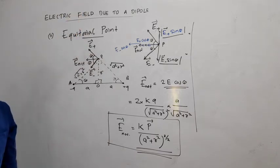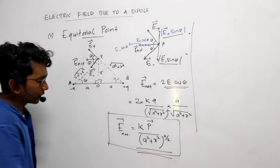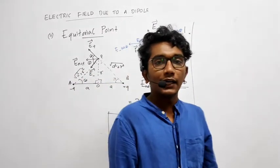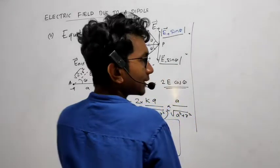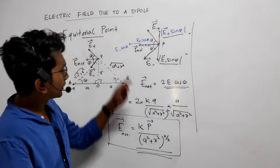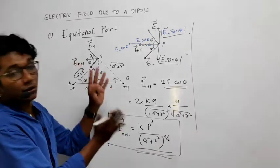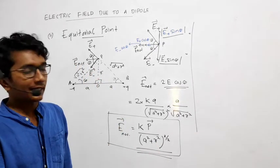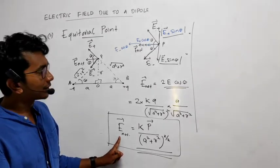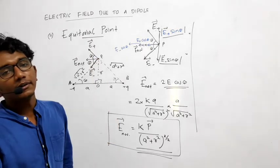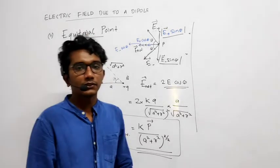That will be the direction of E_net. We will discuss it further in the next video, where we will find out E with A squared plus R squared and conclude all these equations. So this is the net electric field E_net at the equatorial point due to a dipole. Thank you.